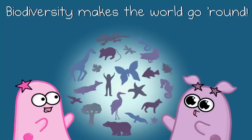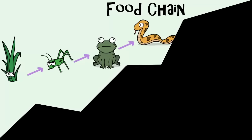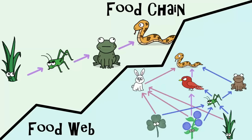High biodiversity has a lot of other benefits that can include economics, and we'll need another video to really touch on all the benefits of high biodiversity. So if we were to ask you which of our examples had more biodiversity — our food chain or our food web — you would definitely want to pick the food web.